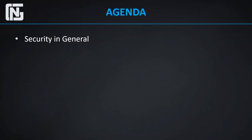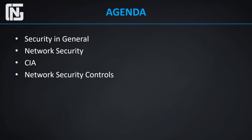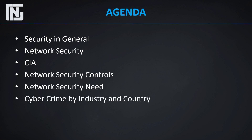We'll start off by looking into security in general — what it is and why it's needed. Then we'll look into network security, and talk about CIA: confidentiality, integrity, and availability, which is basically the goal of network security. Then we'll talk about some of the controls needed for network security, the need for it in today's world, cyber crimes by industry and country over the last few years, and finally some of the types of network security.